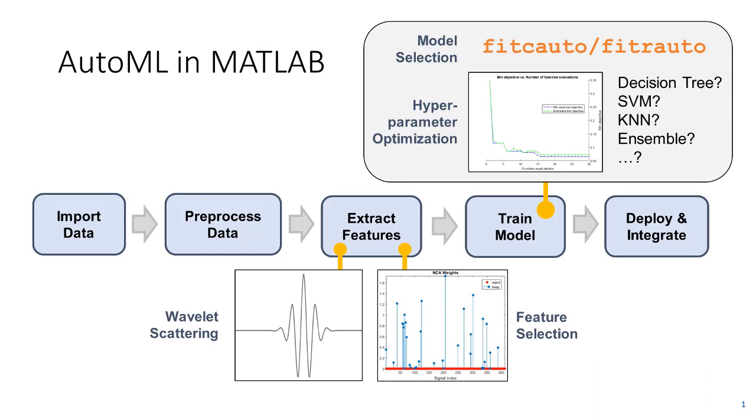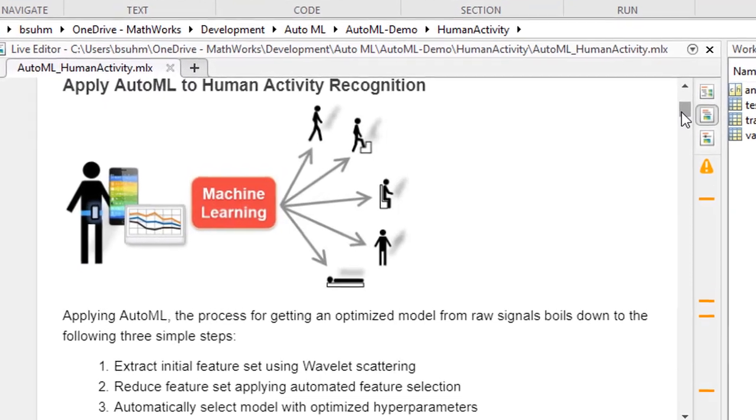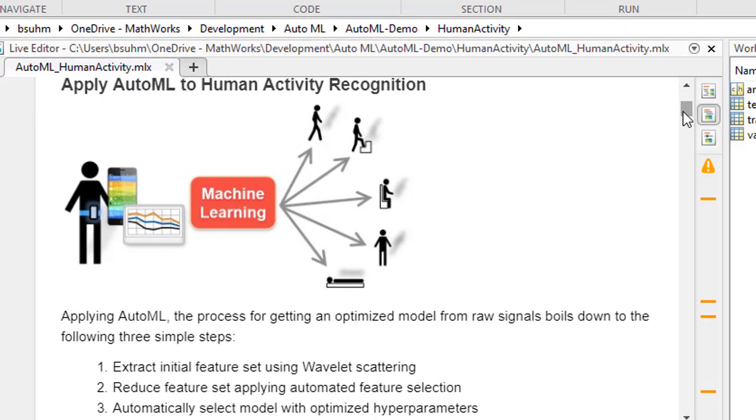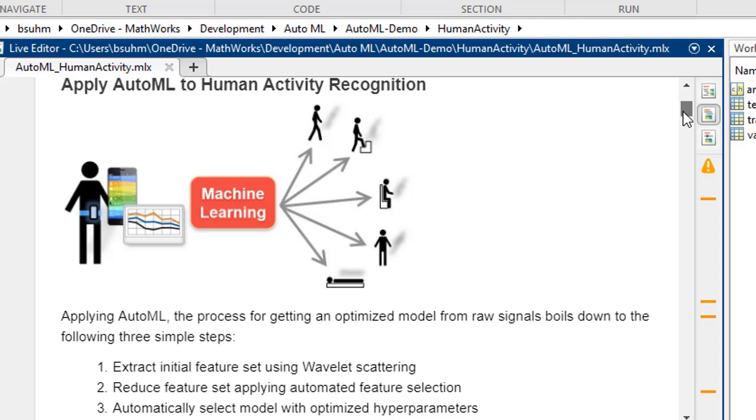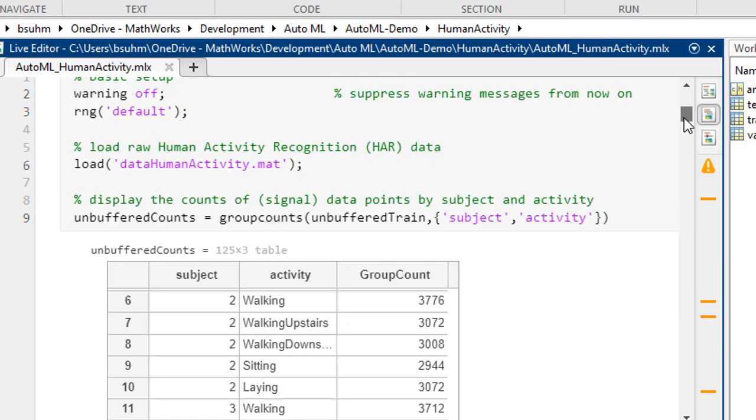However, this video uses some technical terms to explain what's happening behind the scenes. We demonstrate AutoML building a model to classify activities such as standing or sitting, using accelerometer data from a mobile phone.